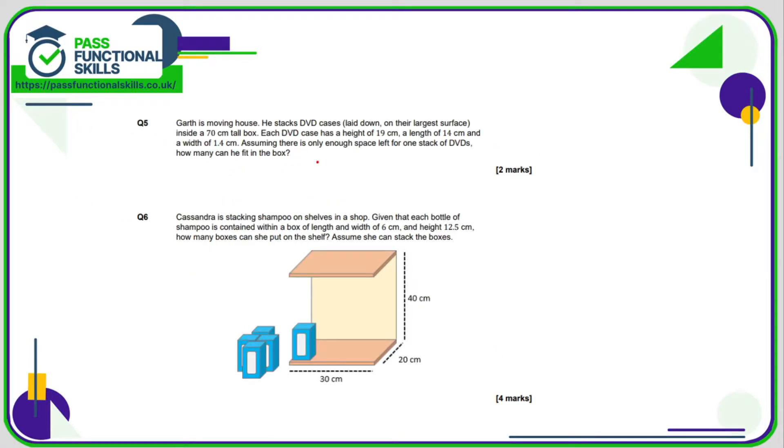Question number 5, so we're just going to imagine the DVD case, so it's got a height of 19, length of 40. I think it's a bit confusing calling this the length, but I think we all know what a DVD case looks like. So it's got two quite long sides, so a 19 and a 14, and then it's got a very thin, I would personally call this the width, really, but I suppose it depends on which direction you're looking at them.